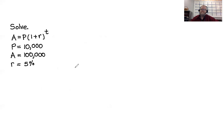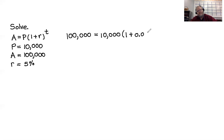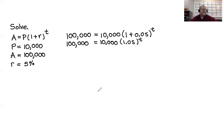Next problem: how long will it take for $10,000 to turn into $100,000 at 5% interest? Replace A with 100,000, P with 10,000, and r with 0.05. So 100,000 equals 10,000 times 1.05 to the T. Dividing both sides by 10,000 gives 10 equals 1.05 to the T. I could use natural log, but common log is better here because the base is 10.